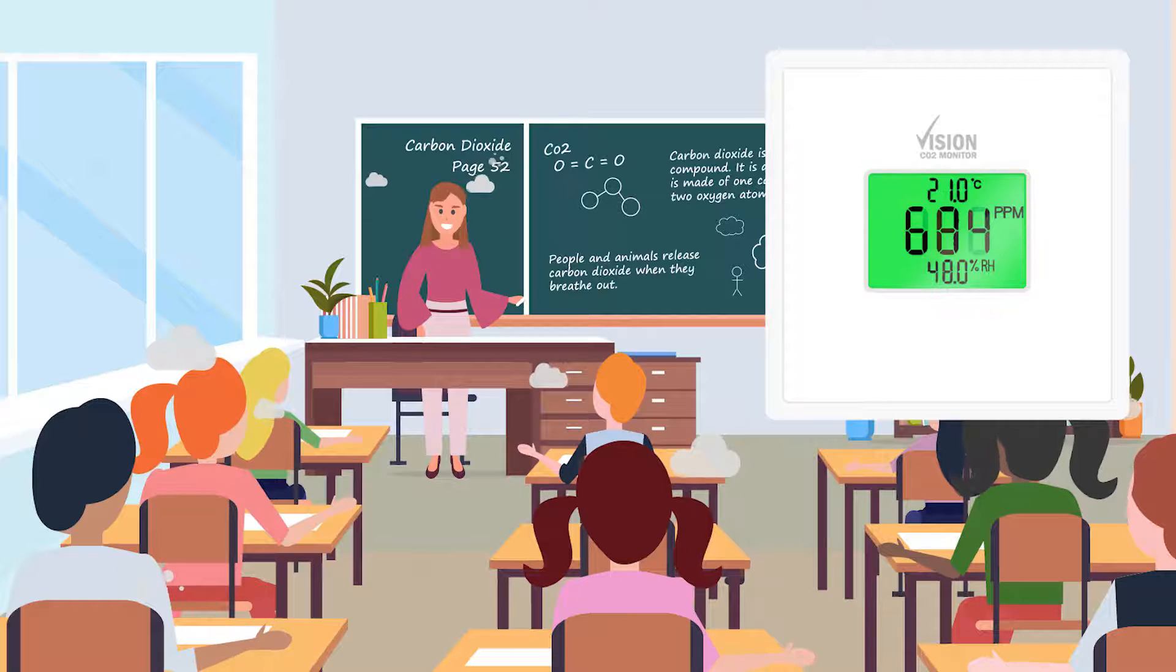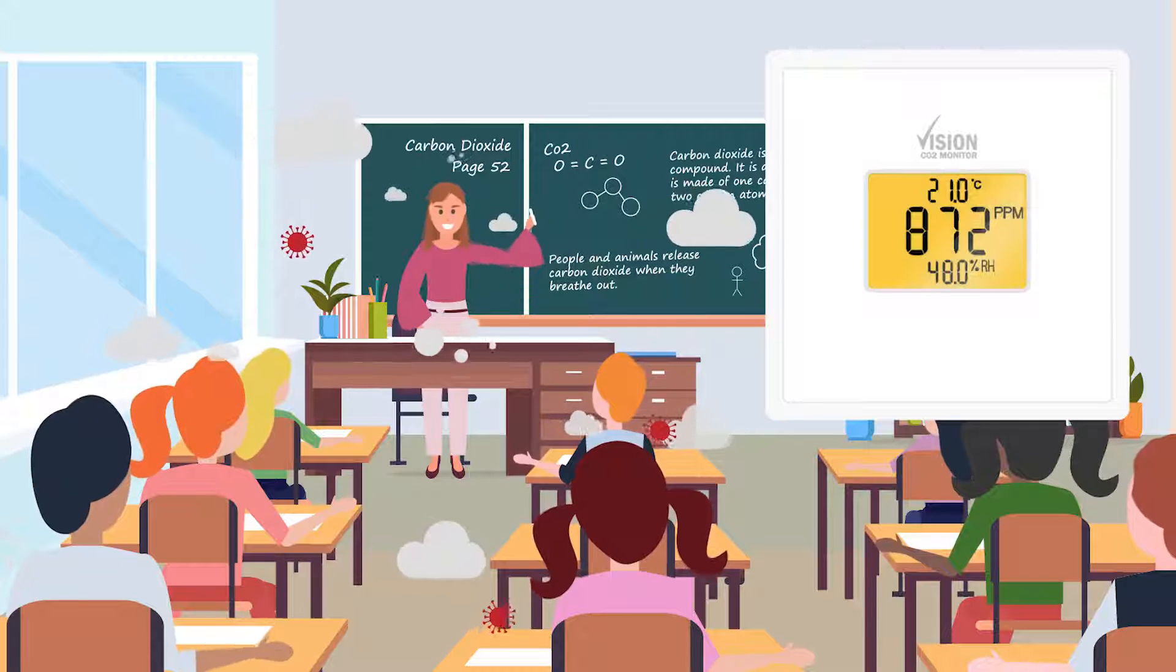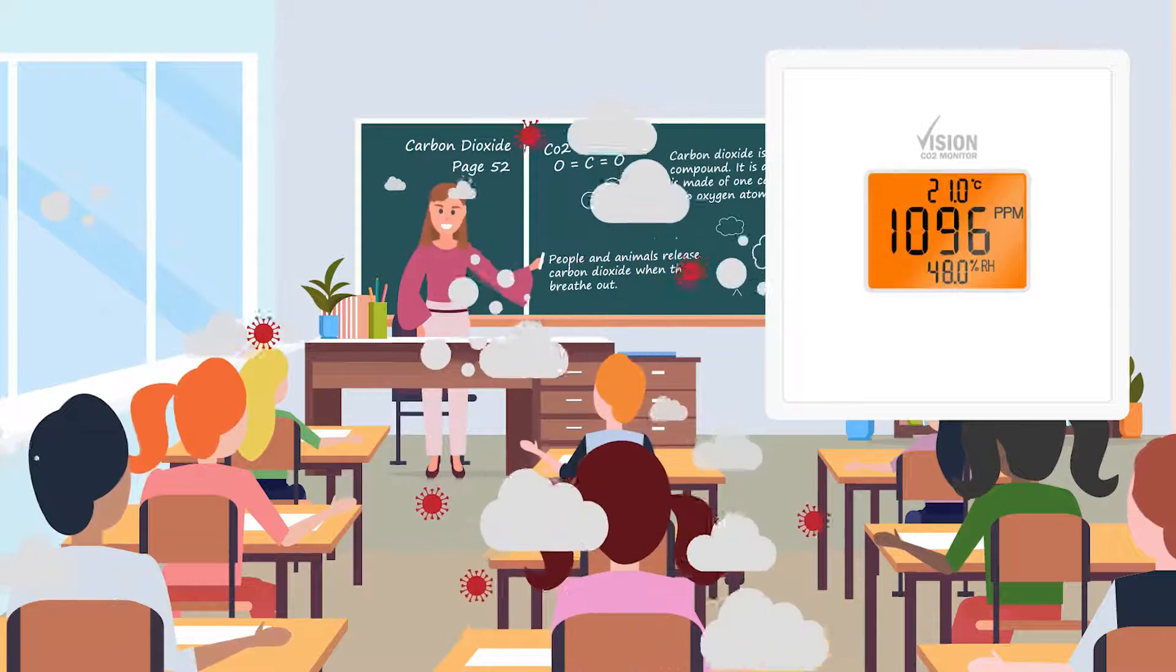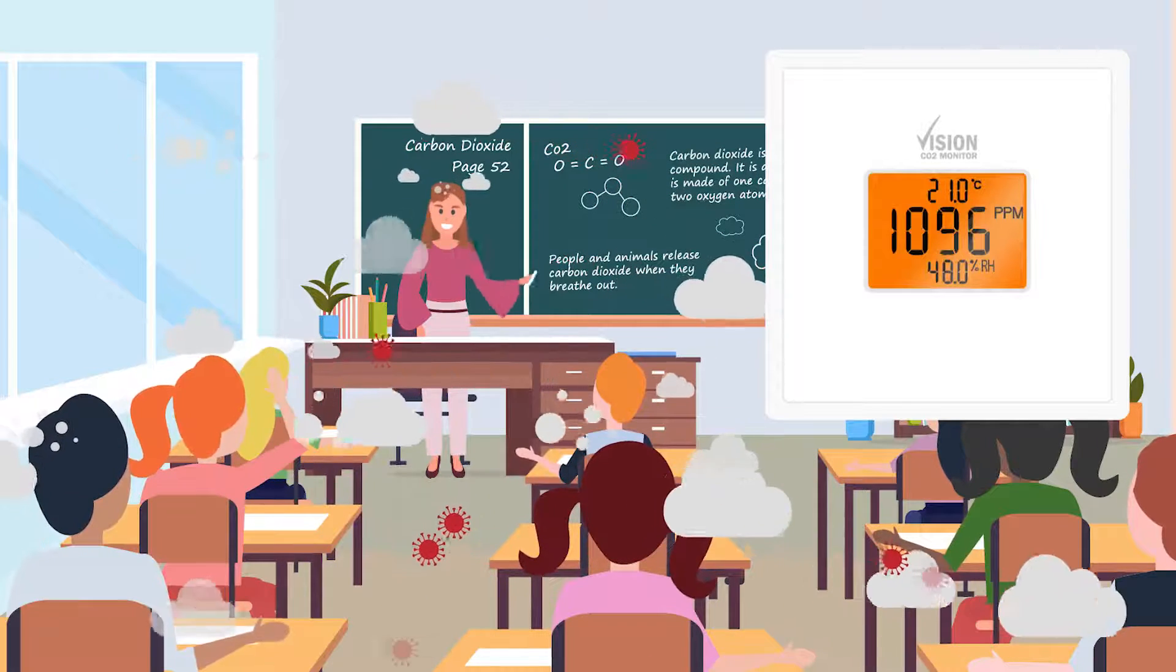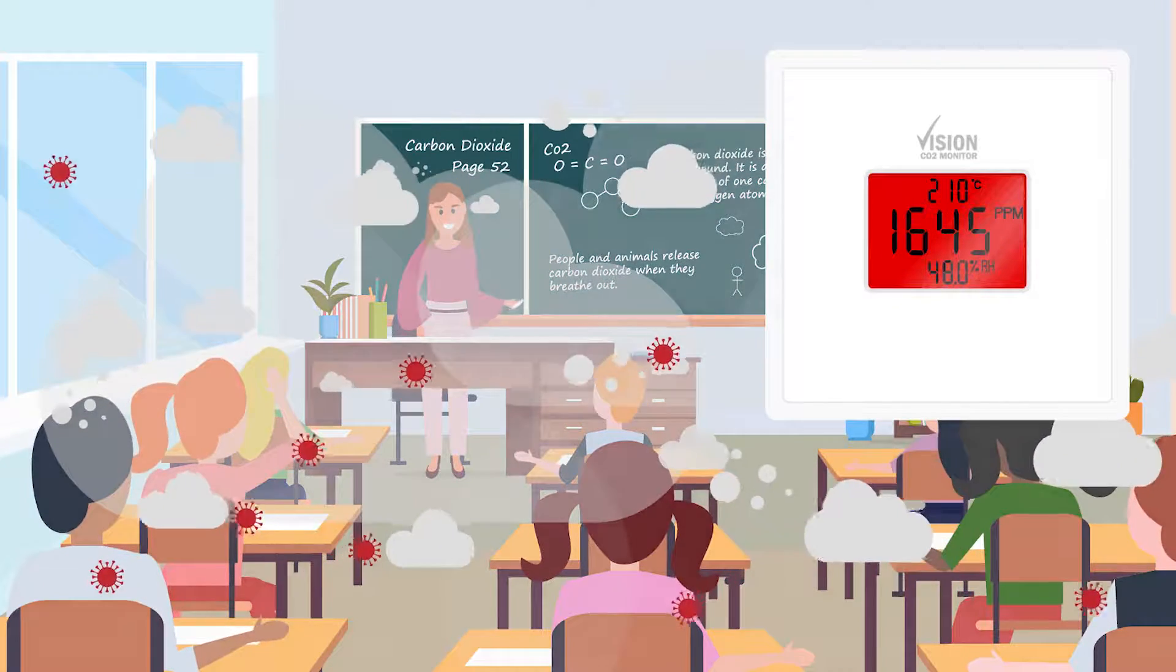Whether these particles are being removed can be measured using a CO2 monitor. Heavily occupied spaces such as classrooms pose a greater risk due to occupancy density. If someone in the room is carrying a virus, poor ventilation can significantly increase the risk of airborne transmission.